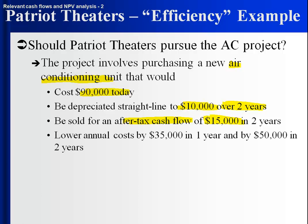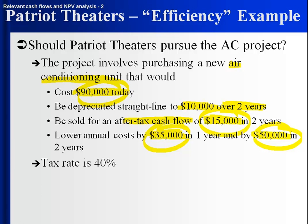In year one, costs would be lowered by $35,000, and in year two, costs would be lowered by $50,000. So we know the cost savings. Do we want to spend $90,000 for a piece of equipment that's going to save us $35,000 in year one, $50,000 in year two, and that we can also sell after taxes for $15,000? The tax rate is 40% and the cost of capital is 8%.